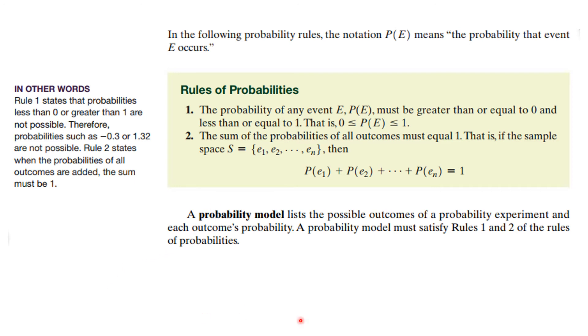Okay, now, in probability rules, the notation P of E is read the probability of E. That's the probability that event E happens. And there are two rules of probability that we discuss here. The probability of any event is a number. It must be greater than or equal to 0 and less than or equal to 1. And if you add up all the probabilities, it must equal 1. So if you add up all the probabilities of the events, it must equal 1. And a probability model lists all possible outcomes of a probability experiment. And so, in other words, rule 1 says probabilities are between 0 and 1, and so they can't be negative. And rule 2 says if you add them up, it must add up to 1.